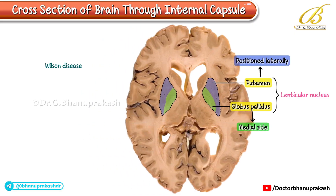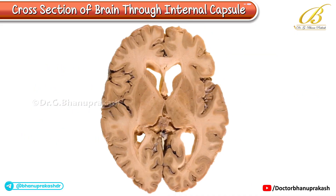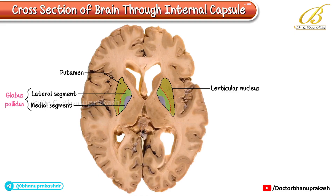Wilson disease, characterized by copper accumulation, can impair the function of the lentiform nucleus, leading to hepatolenticular degeneration. On the left side of the axial brain slice, you can clearly see the medial and lateral segments of the globus pallidus.